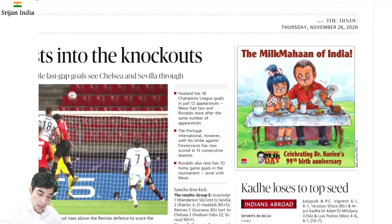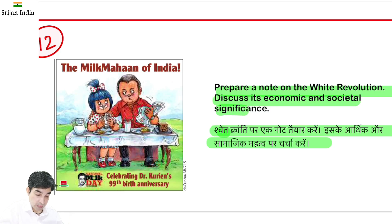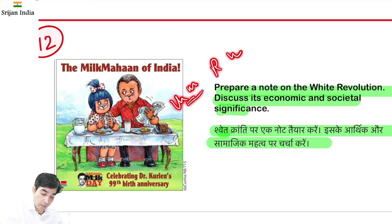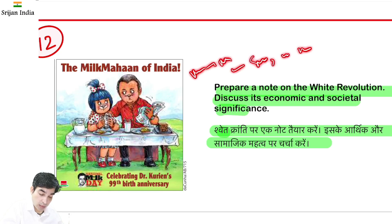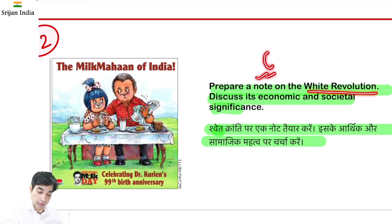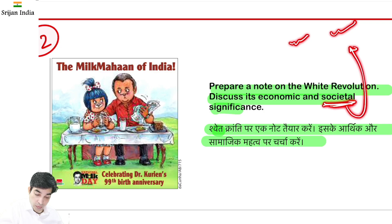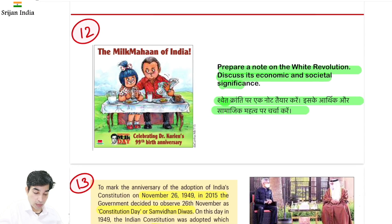The Milk Man of India — Dr. Kurian — 99th birth anniversary. India mein jo White Revolution hua, Operation Flood, usme unka bahut important role raha. Self-help groups banaye, Gujarat ke Anand mein extremely good work kiya — yeh ek success story hai aur case study maana jaata hai. Today's writing question: prepare a note on the White Revolution — discuss the economic and societal significance, including women's financial independence and societal betterment.